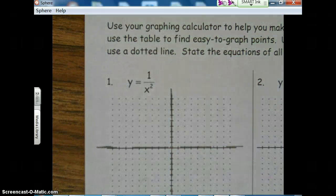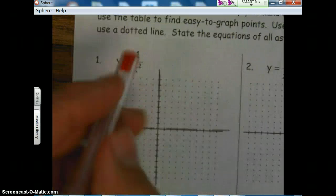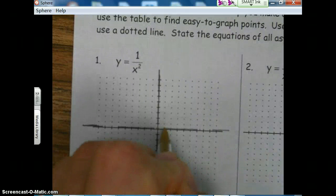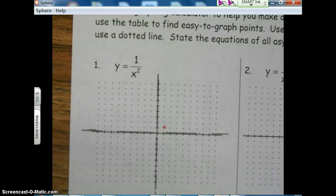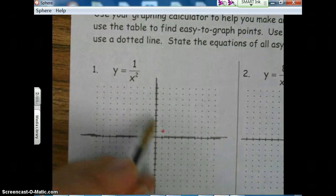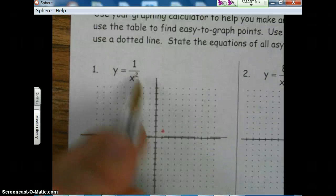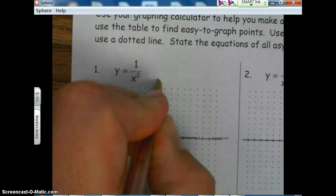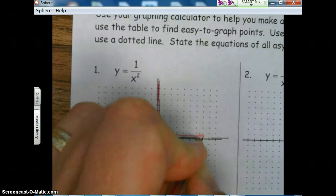Next, what's our a value? Our a value is one. So let's just prove that that's true. So if x is one, if I plug one in here, one squared is one, and one divided by one is one. So that's right. So we're going to have our graph up here in the first quadrant.